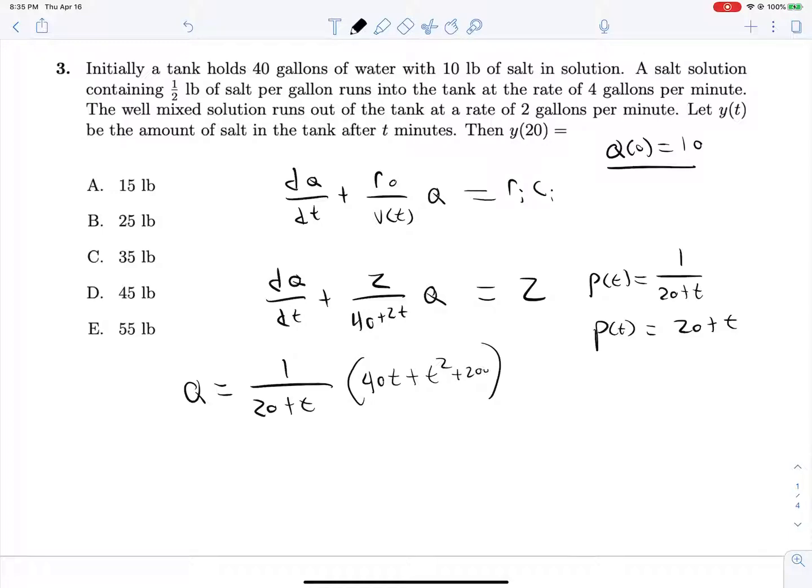And then finally we're finding y at 20, so q at 20. We're using q here - a lot of the questions tend to use q, I'm not really sure why this one is using y instead. This is equal to 1 over 40 times 40 times 20, which is 800, plus 20 squared, which is 400, plus 200. So 800 plus 600 is 1400. 1400 over 40 is 140 over 4, which is 70 over 2, which is 35. And I remember from practicing this exam over and over that that is in fact our correct answer.